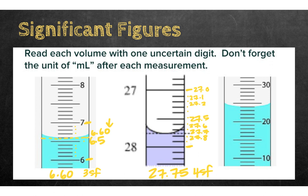The final example is a graduated cylinder with values 20 and 30, giving 10 intervals of 1 mL each. The ones place is certain and the tenths place is uncertain. The reading is 24.0, with the zero being the uncertain digit — three significant figures.